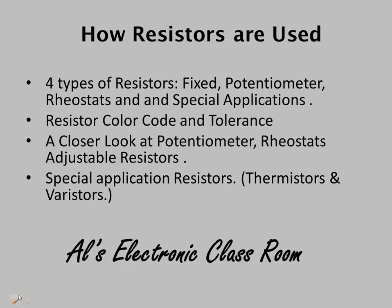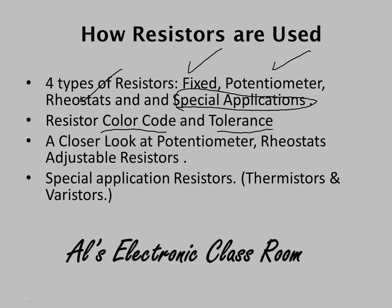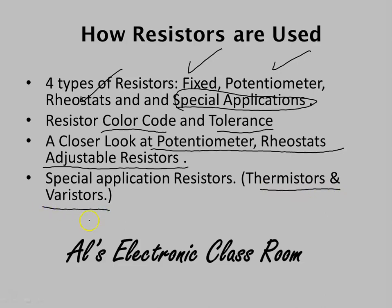There are four types of resistors we're going to speak about: the fixed, potentiometers, rheostats, and what I call special application resistors. We're also going to talk about the resistance color code and the tolerance. The resistor color code determines the ohmic value of the resistor, and the tolerance is another color that will determine the tolerance of the resistor. We'll also take a closer look at potentiometers, rheostats, and adjustable resistors, and we'll end with a definition and some theory on special application resistors — thermistors and varistors.